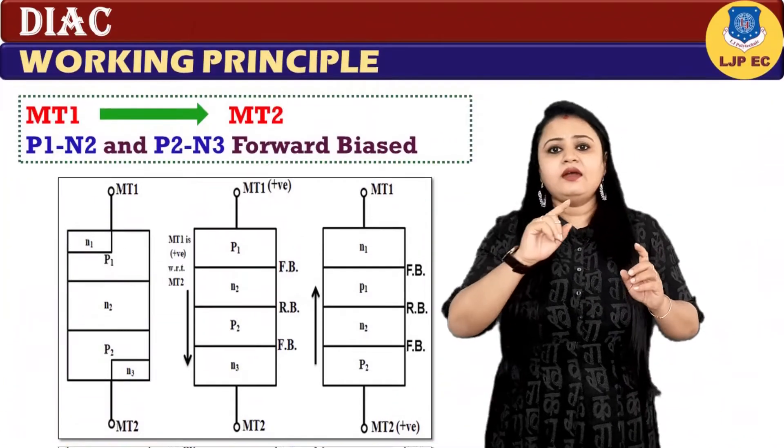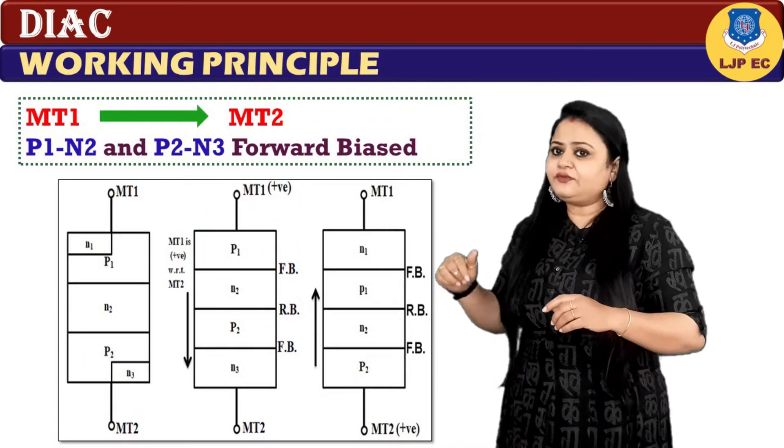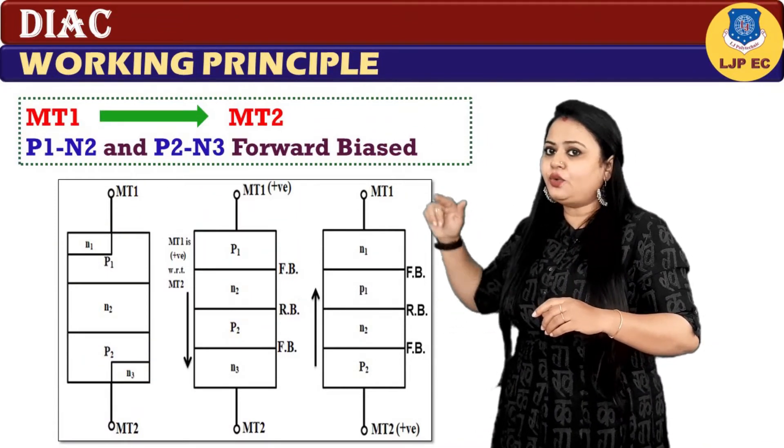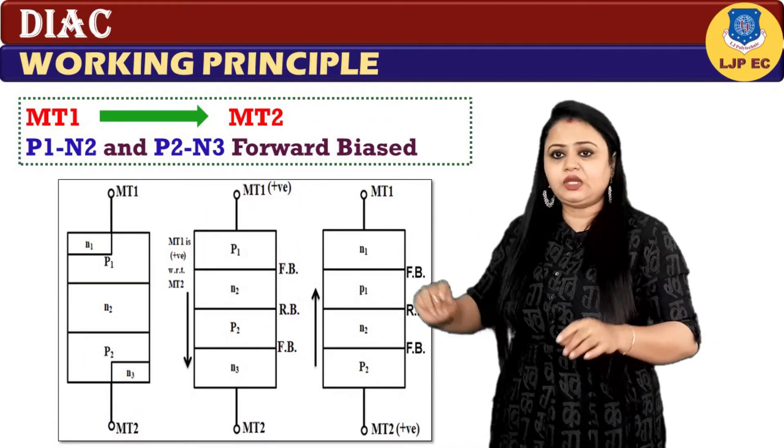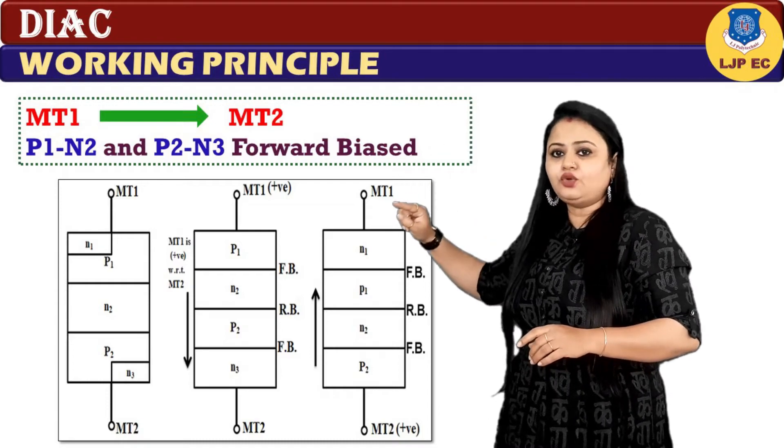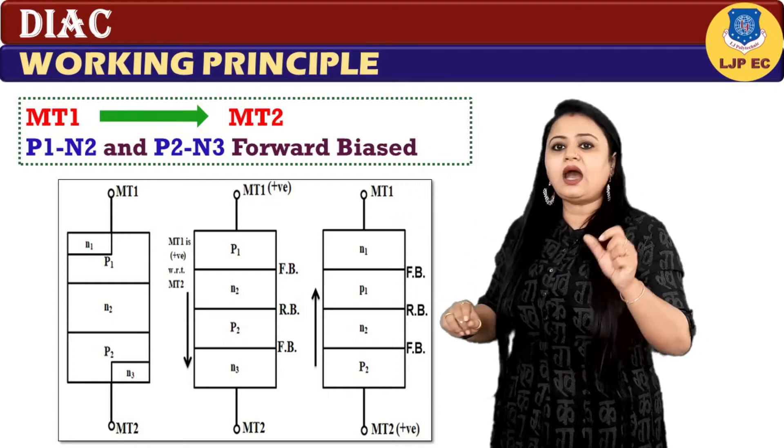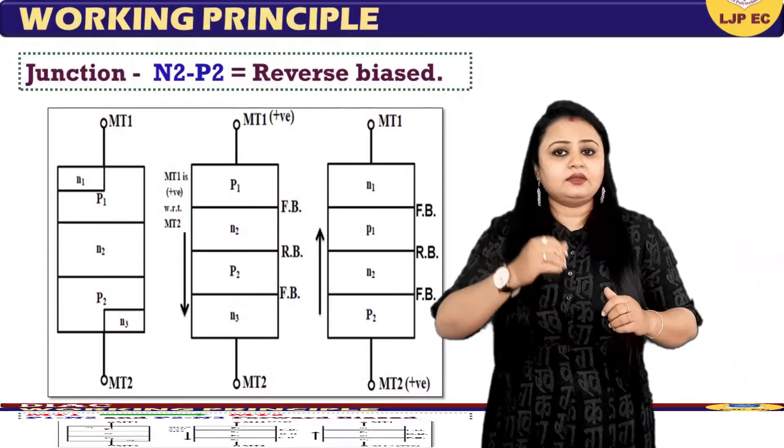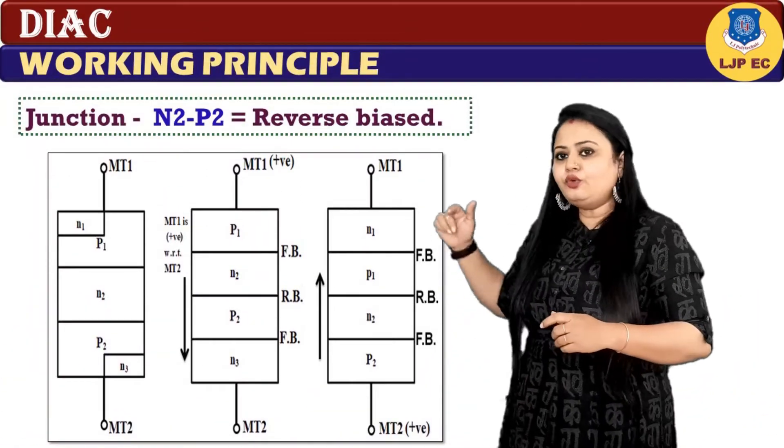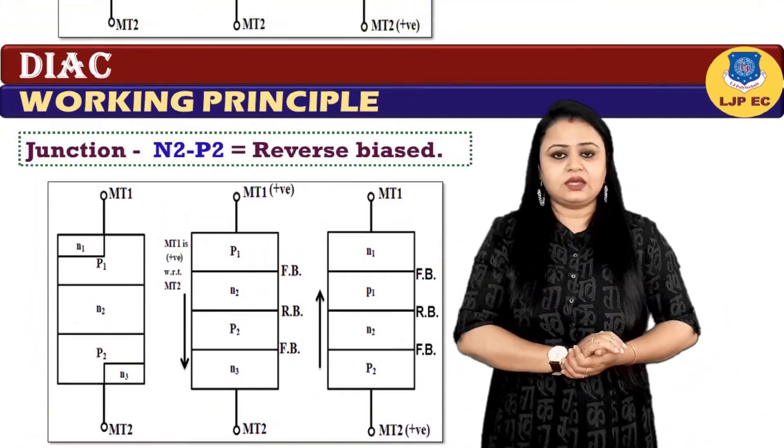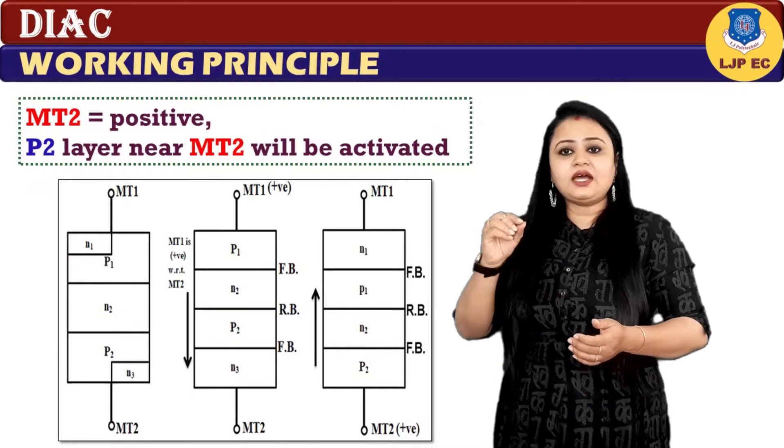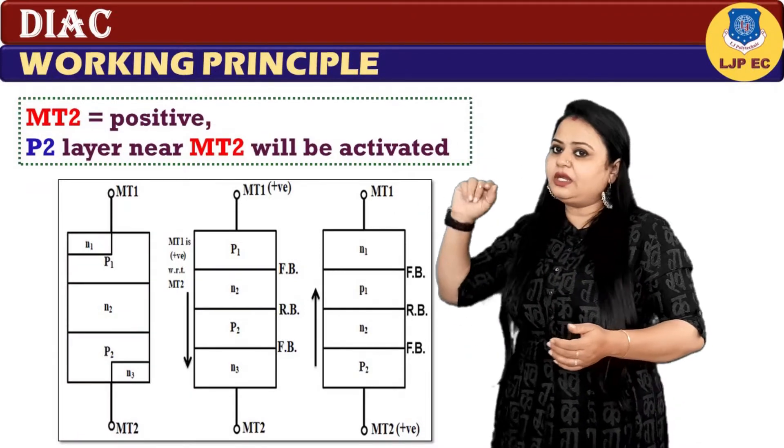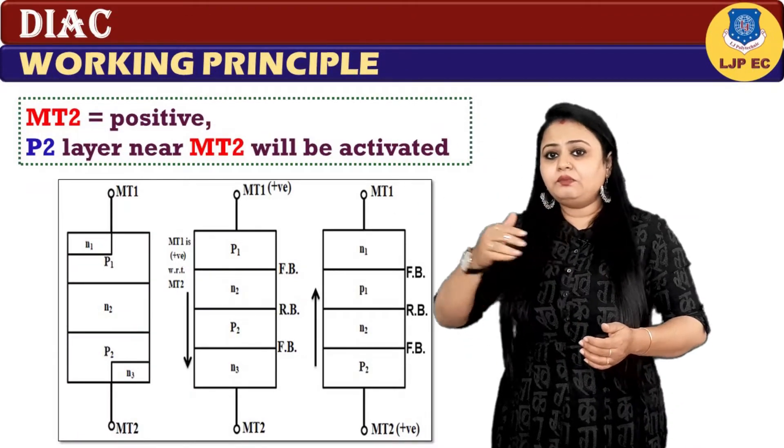When the current is flowing from MT1 to MT2, the junctions between P1-N2, P2-N3 are forward biased, and the junction between N2-P2 is reverse biased. Similarly, if we consider MT2 terminal to be positive, then P2 layer near MT2 will be activated.